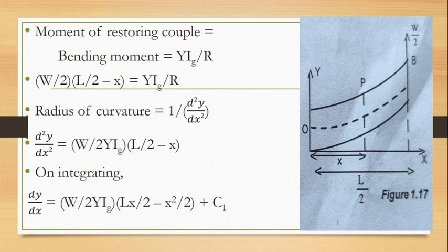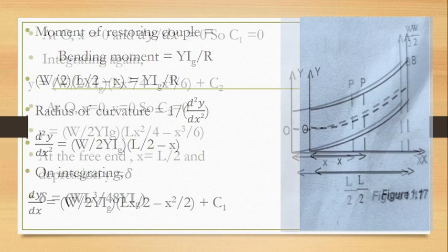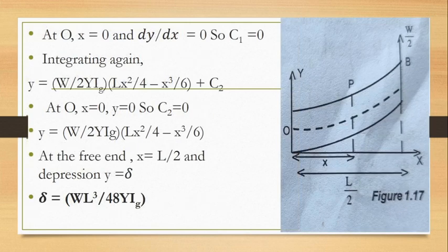To find Y from d²y/dx², we integrate. On integrating, we get dy/dx with a constant of integration C1: dy/dx = W by 2YIG into (LX by 2 minus X² by 2) plus C1. To find C1, we apply the condition that at O, the middle point, X is 0 and there is no deviation, so dy/dx equals 0. Substituting X equal to 0 and dy/dx equal to 0, we find C1 equals 0.